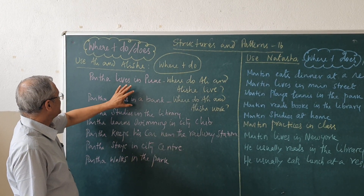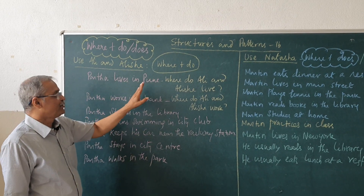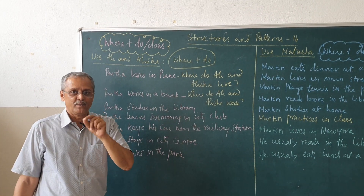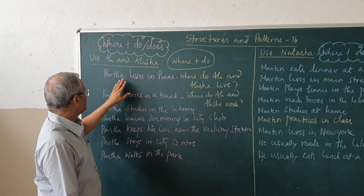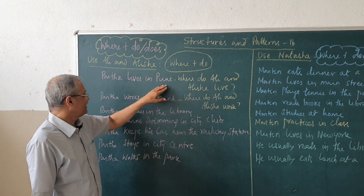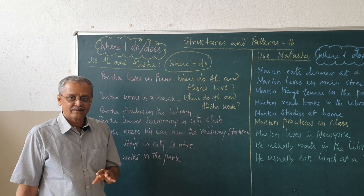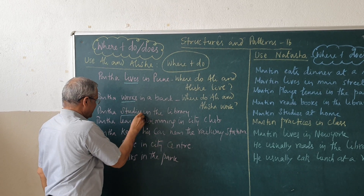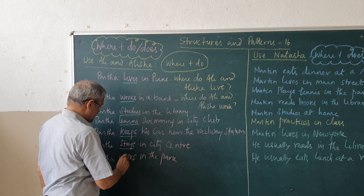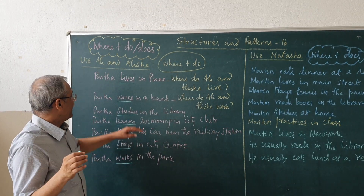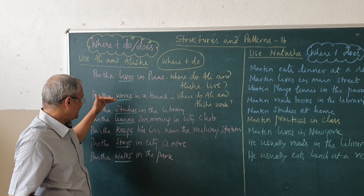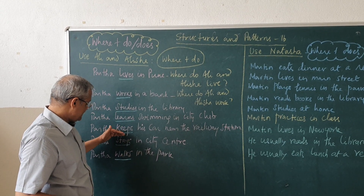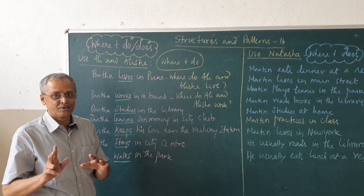First, we will see: Partha lives in Pune — where does Partha live? I will teach you the short answering method today. When it comes to verbs like lives, works, studies, learns, keeps, stays, walks, it will come: where does he live, where does he work, where does he study, where does he learn, where does he keep, where does he stay, where does he walk. That should be clearly observed.